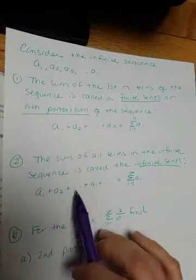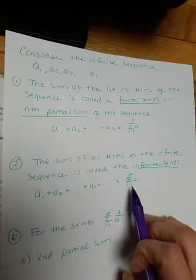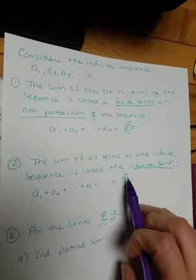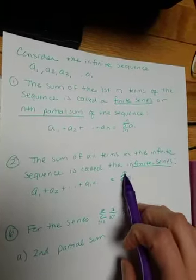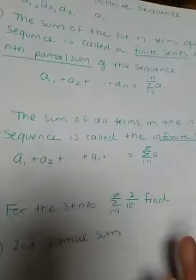So a sub 1 plus a sub 2 plus some a sub i, but then it keeps going. Your lower limit is 1, the upper is infinity because you're not stopping. And again, it's of that a sub i term, whatever we're looking at.